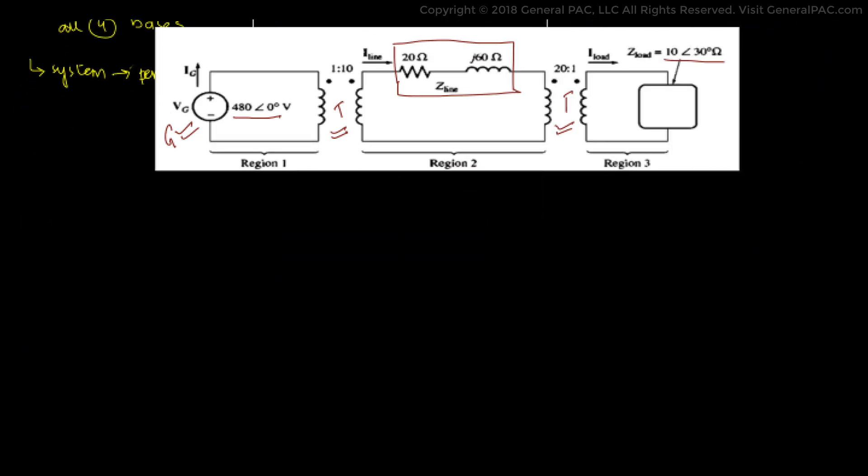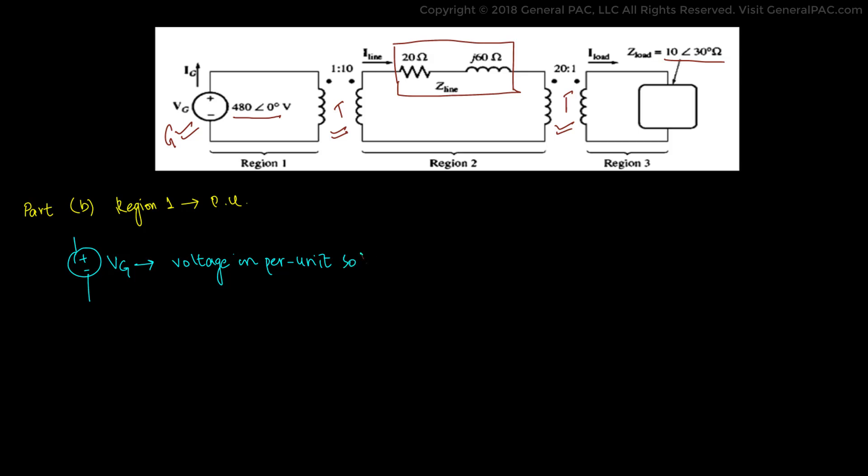Now moving on to part B. In part B, we are asked to convert region 1 into the per unit equivalents. Since region 1 consists of a generation station, we would have voltage in per units and we will use the per unit formula to find VPU.